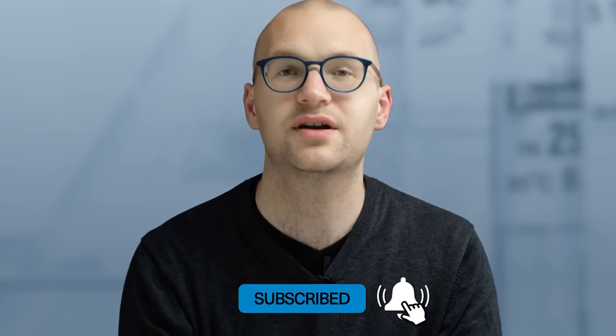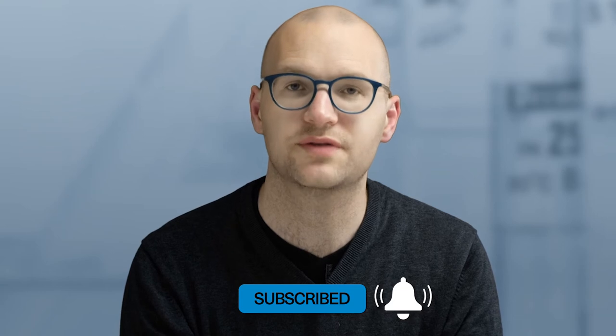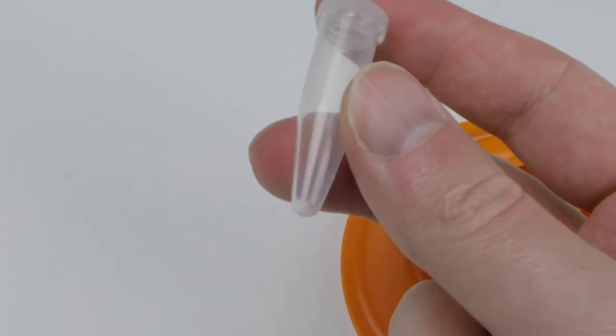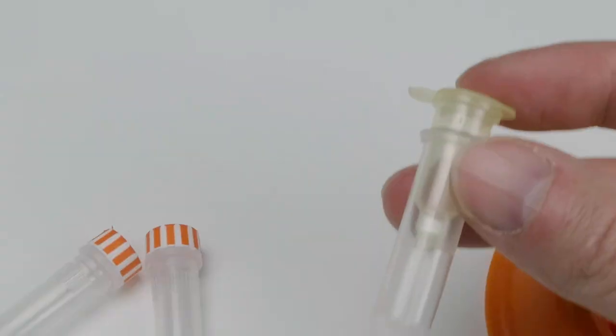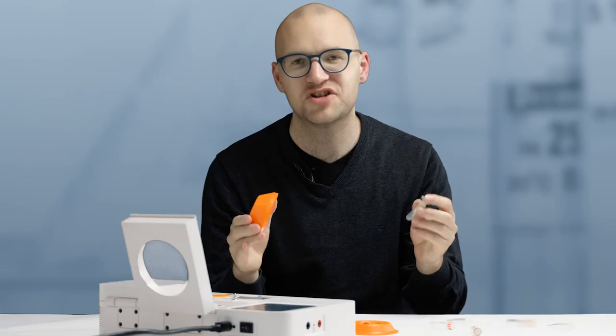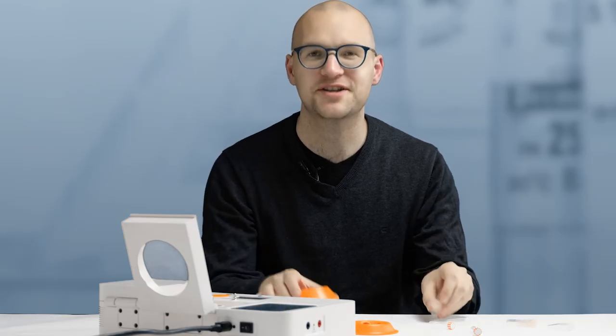For example, many of our professional research customers are interested in using spin columns for DNA purification. With the previous rotor, you had to modify these kits to be used with compatible 1.5 milliliter tubes. But with the new 2 milliliter rotor, these spin columns just fit. No modifications necessary.